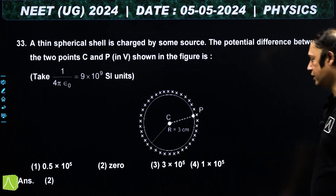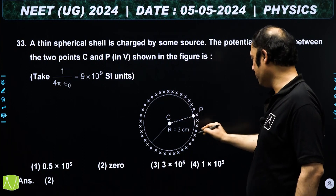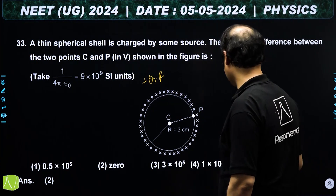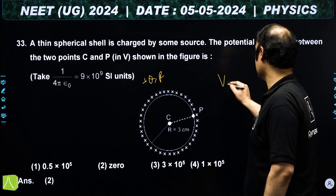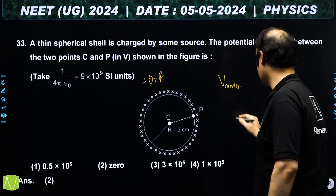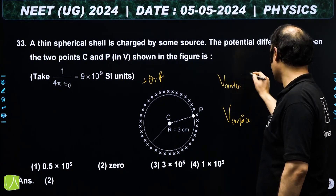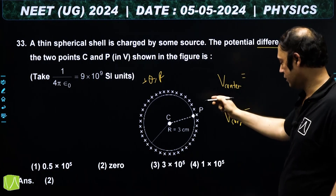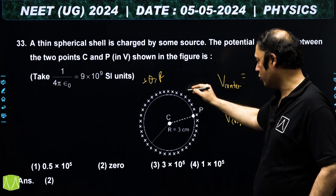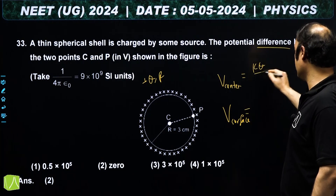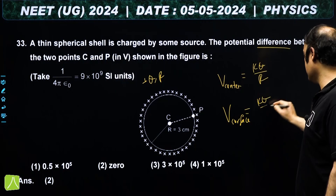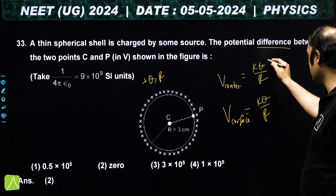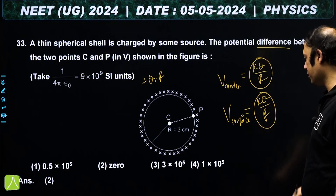Next question: we are given a uniformly charged hollow sphere with charge Q and radius R. We need to find the potential at center (C) and at the surface (P). For a uniformly charged hollow sphere, the potential at the center is kQ/R and the potential at the surface is also kQ/R.